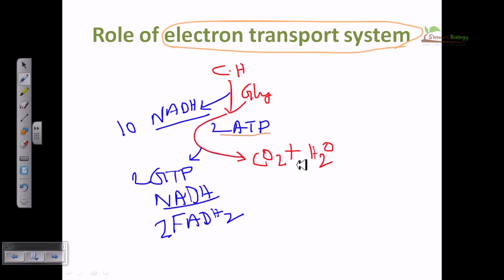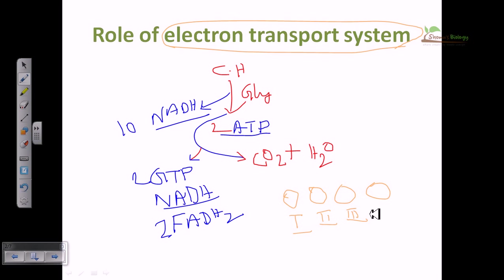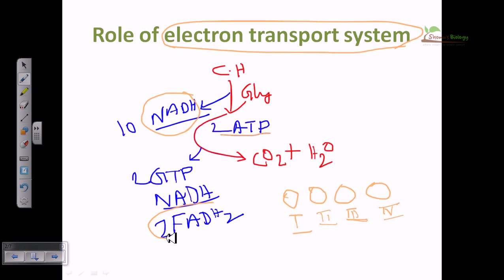But that conversion cannot happen except through the electron transport system — and therein lies its importance. The electron transport system is based on a series of electron-carrying molecules called complexes. Usually four different complexes carry electrons from one to another, and as a result protons are pumped outside. This system is embedded in the mitochondrial membrane, where a proton gradient is formed. Using this concentration gradient of protons, we can produce ATP. Energy-containing molecules like NADH and FADH2 give their electrons to these complexes to help produce ATP.